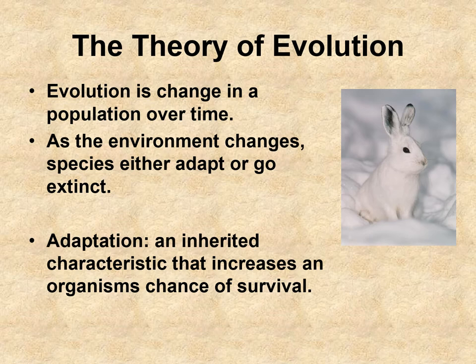The species doesn't say 'I need to adapt' — that's not what happens. It's just that the brown rabbits live in non-snowy areas better than the white rabbits do. And therefore, we call this an adaptation — an inherited characteristic that increases an organism's chances for survival.